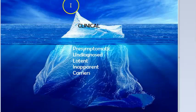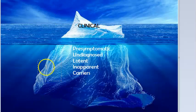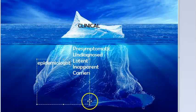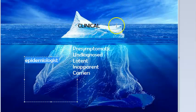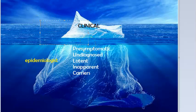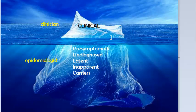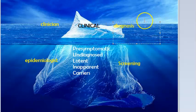An epidemiologist is concerned with the hidden portion of the iceberg, whereas a clinician is concerned more with the clinical cases — the tip of the iceberg. Screening is done for the hidden portion and diagnosis is done for the visible cases. For clinical cases, diagnosis and treatment are also carried out.